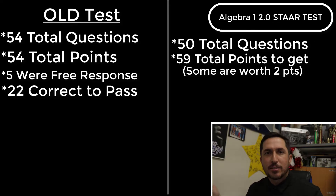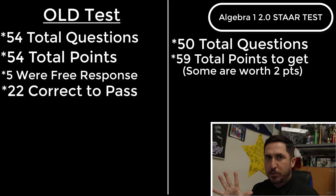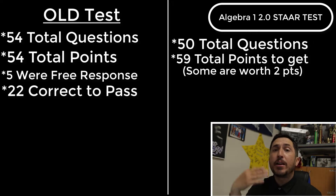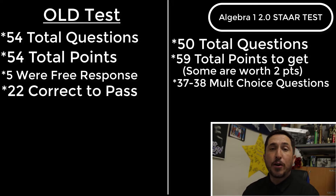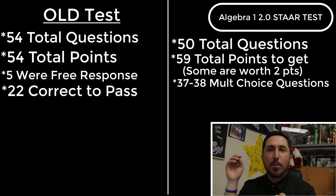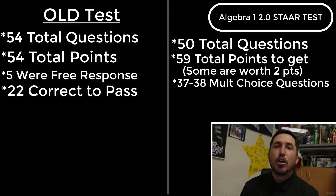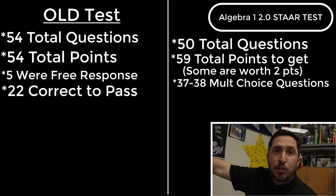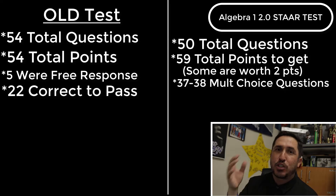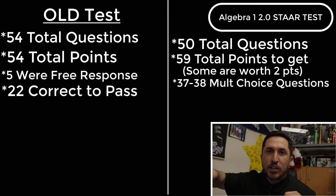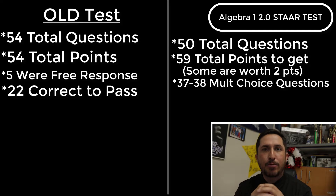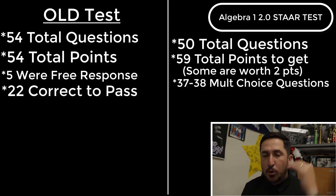Don't worry about it. Of those 50 questions, 37 or 38 of them are still going to be multiple choice — the regular A, B, C, D stuff. So 37 to 38 are still going to be A, B, C, D. You'll be fine, just take it like a normal test the way you did before. All our stuff is still gettable. You can still pass the STAAR test without even answering any of the 2.0 questions. You could still possibly pass — if you get all the multiple choice right — but don't do that; that's a terrible strategy. There is still plenty of regular A, B, C, D multiple choice that you can do.